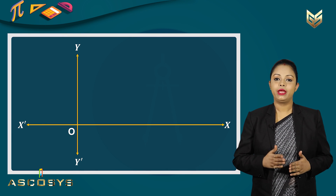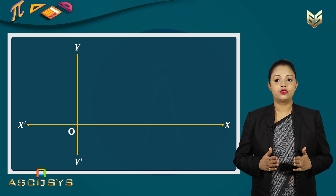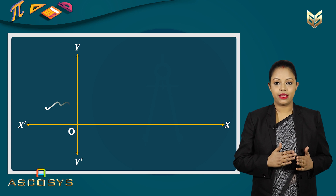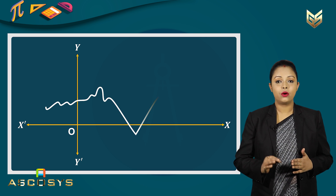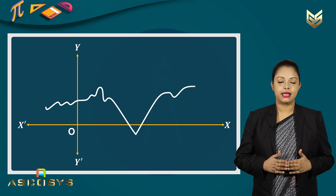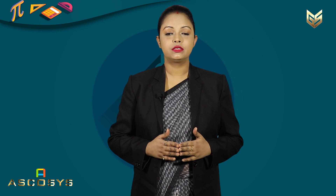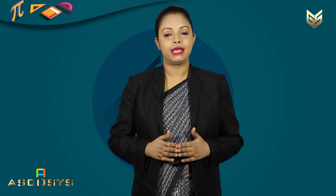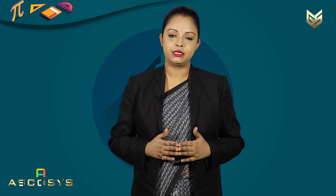Let us see this diagram. We have the x-axis and the y-axis intersecting at the origin. Now we can draw a curve or a function f(x) without any break or without any pause, without lifting our pen. Then we say that the function f(x) is a continuous function. In a continuous function, there must not be any break or pause — we can draw the graph without lifting the pen, and there can be sharp corners. So this is the graphical definition of continuity of a function.